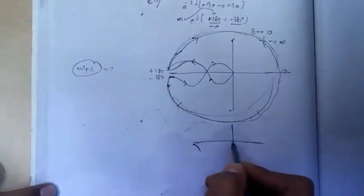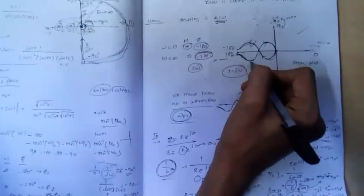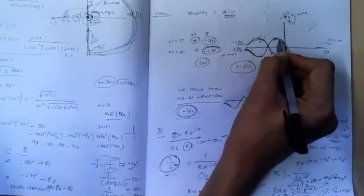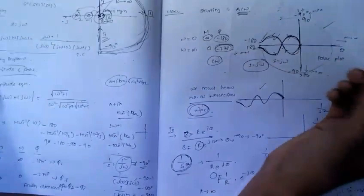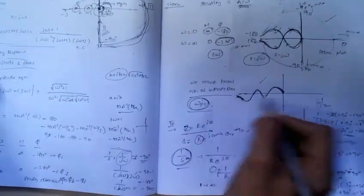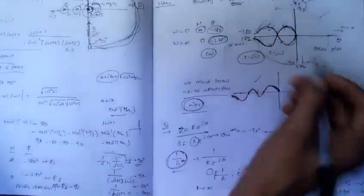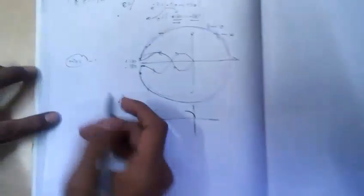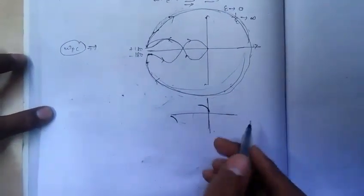We only know the starting direction and ending direction, and previously I assumed it is intersecting only one point and showed you how to draw this. This is correct because we know starting and ending direction, but how many times it is intersecting is unknown to us. So we have to find Omega PC in order to know how many times it is intersecting the phase line.